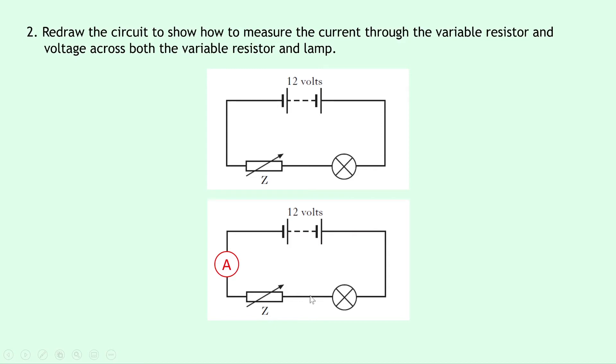You could also put it at the other side over here, and in order to measure the voltage across both of these components, I would connect a voltmeter in parallel there, and a voltmeter in parallel there. Now you could label these as V1 and V2 if you wanted to make them different because they're measuring different things, but just having them as V just now is good enough for this example.